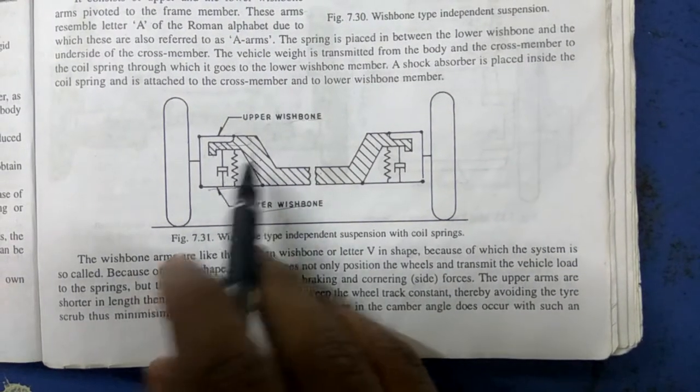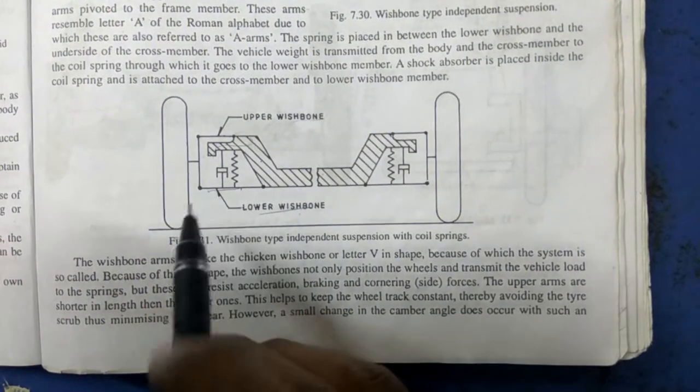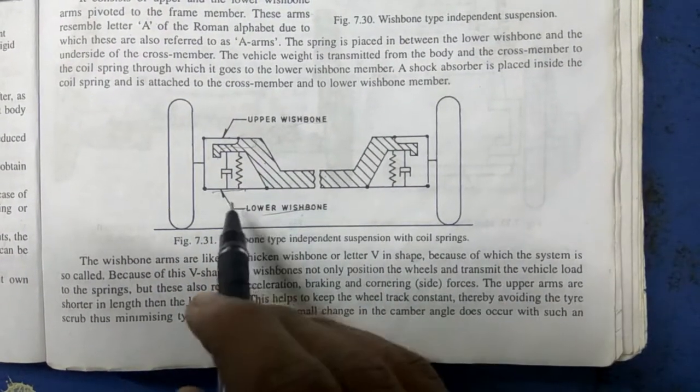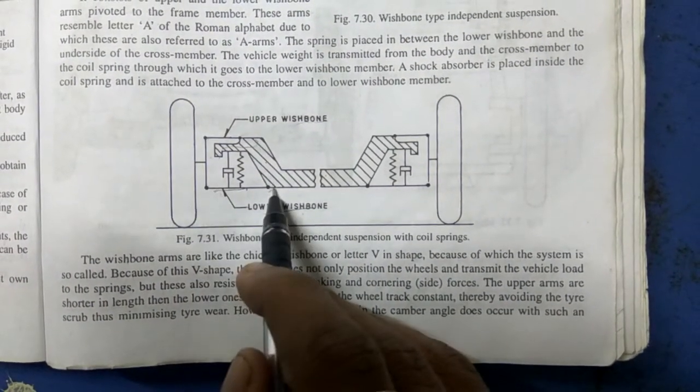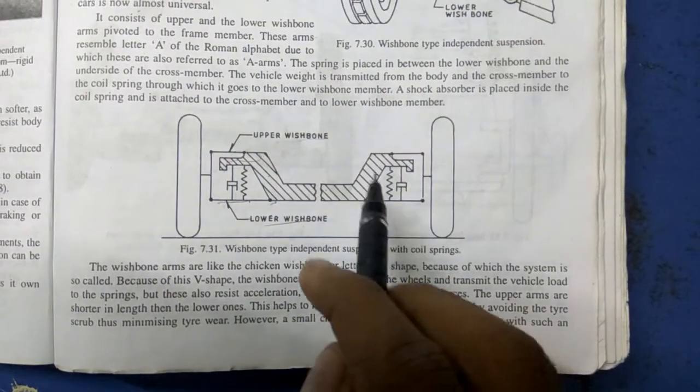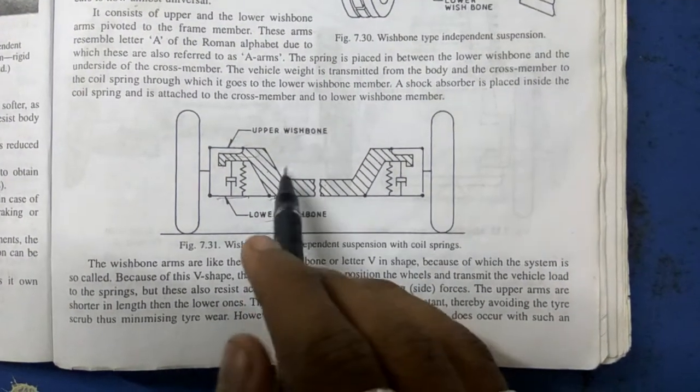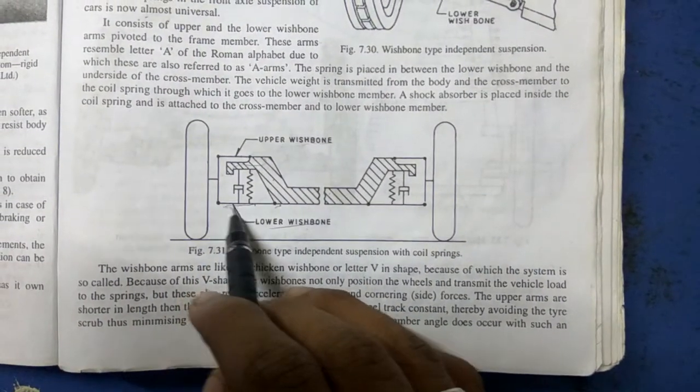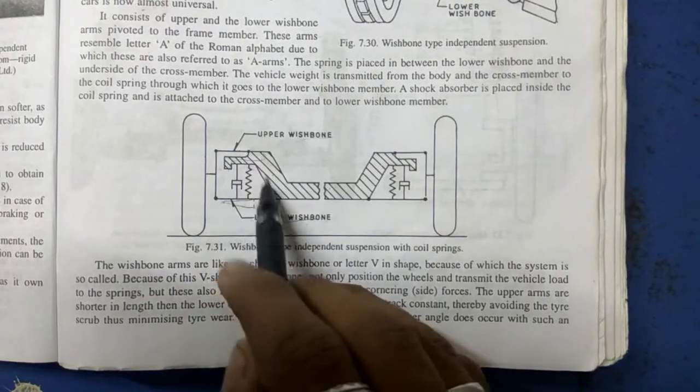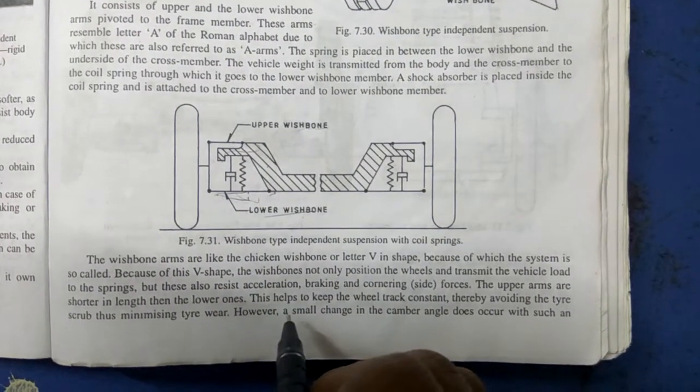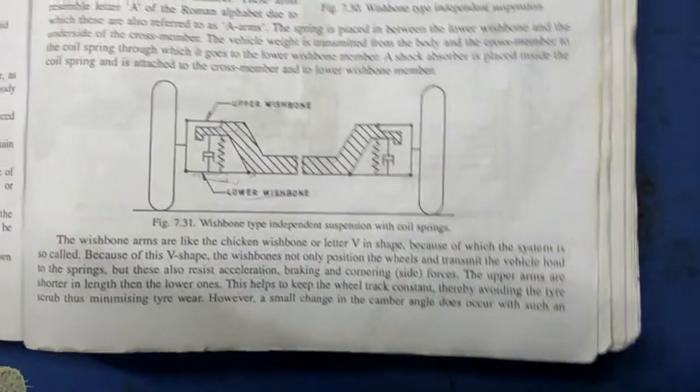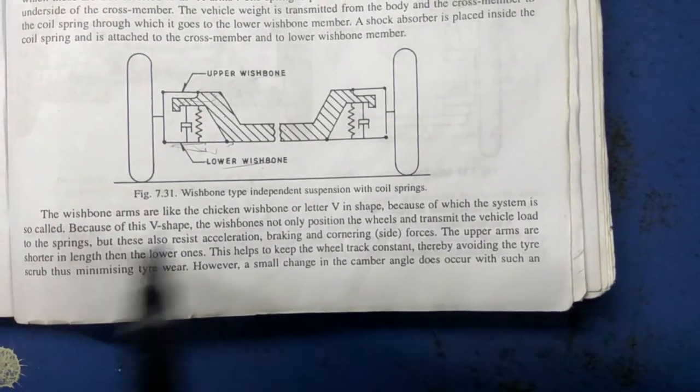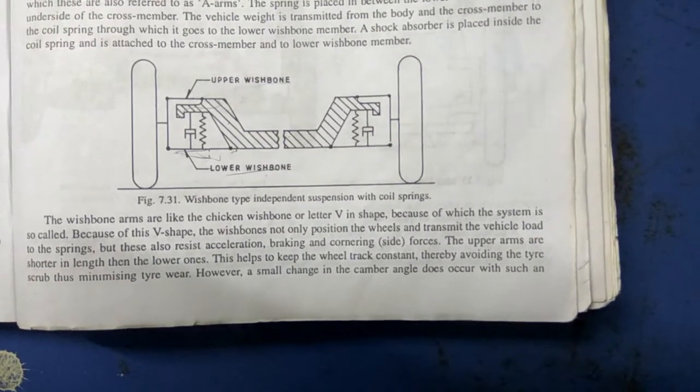In this double wishbone type, generally the upper wishbone arm is shorter compared with the lower wishbone. The weight transfer in this type of suspension is from the body to the lower wishbone and the upper wishbone through its coil springs. Because of this V-shape of the control arms, they not only help in positioning the wheels but also help in resisting acceleration and braking.